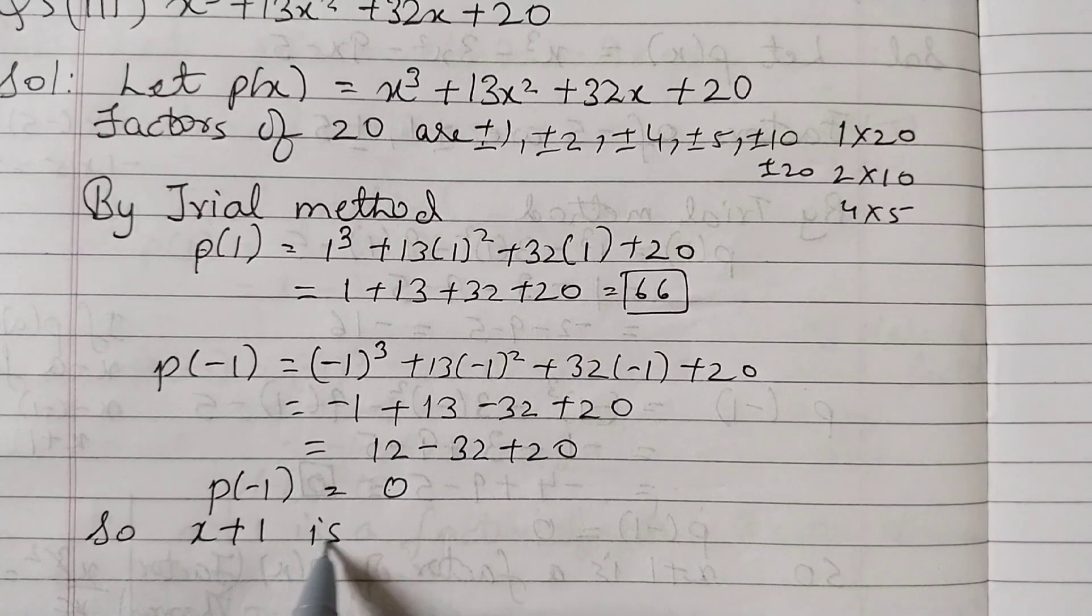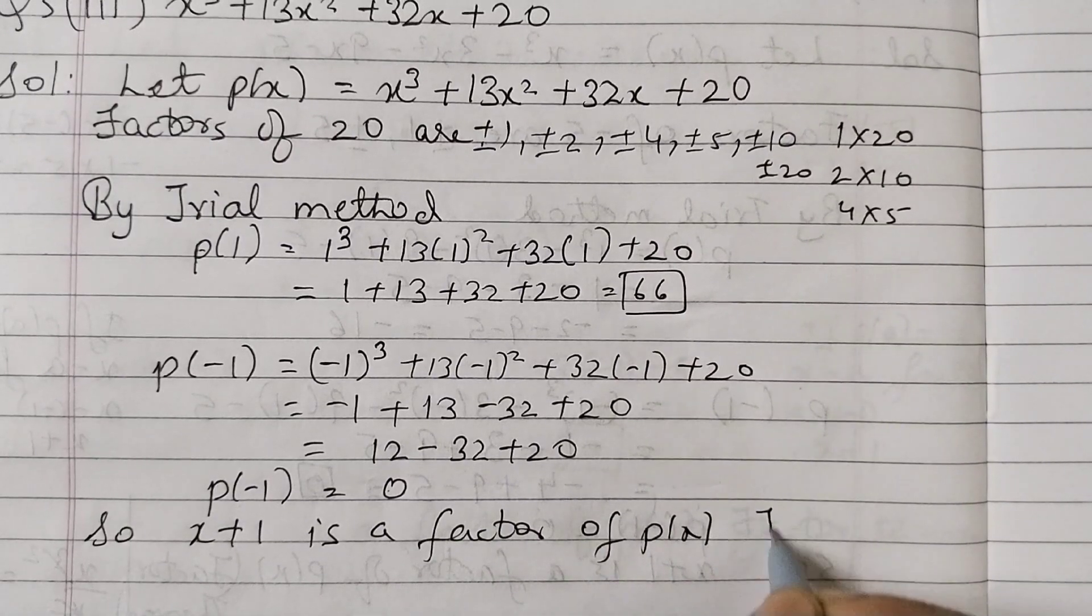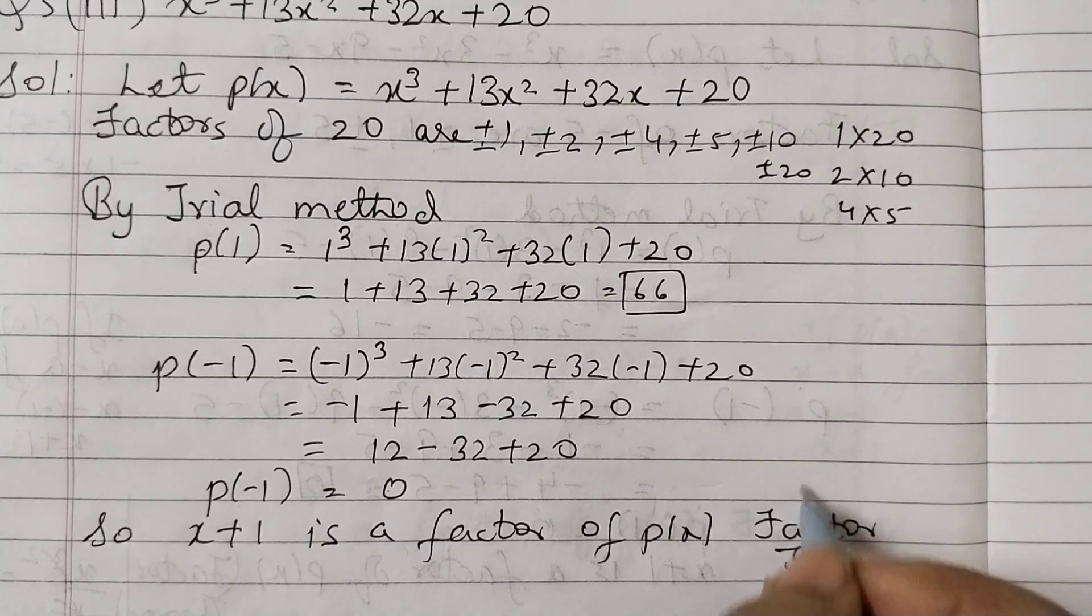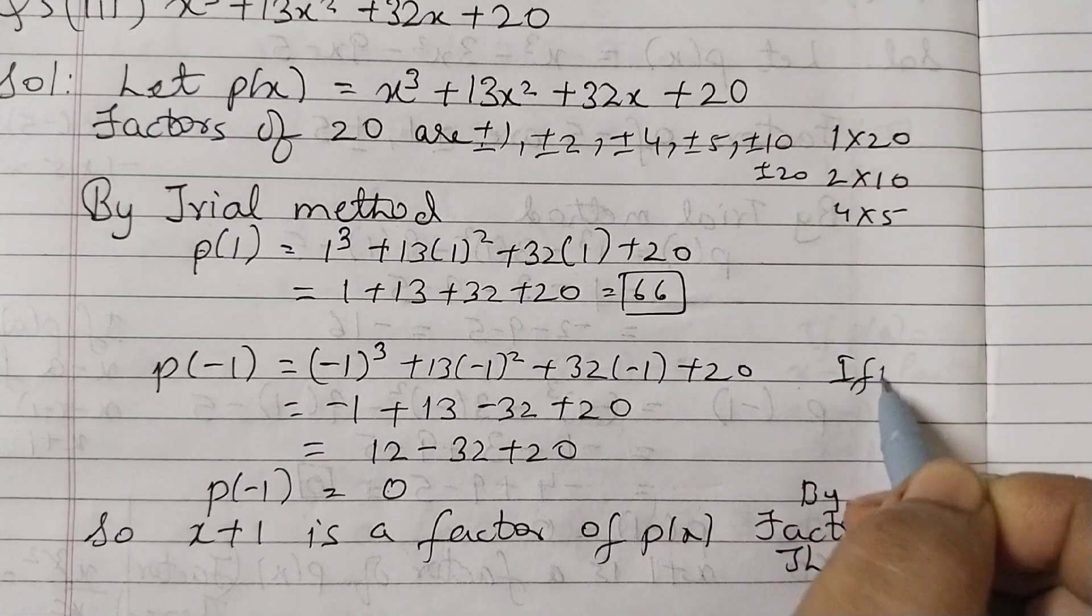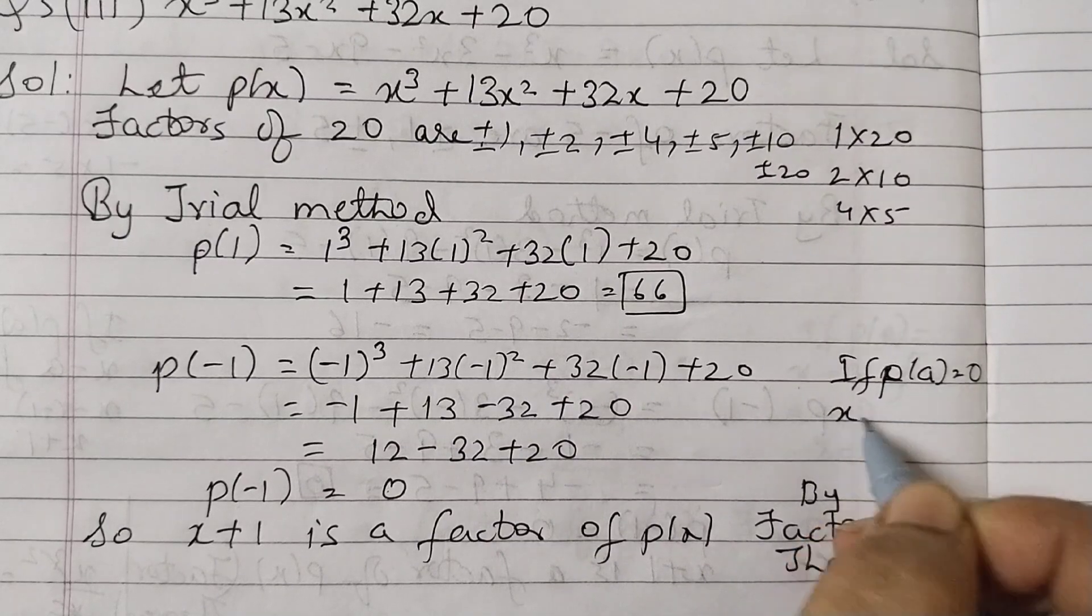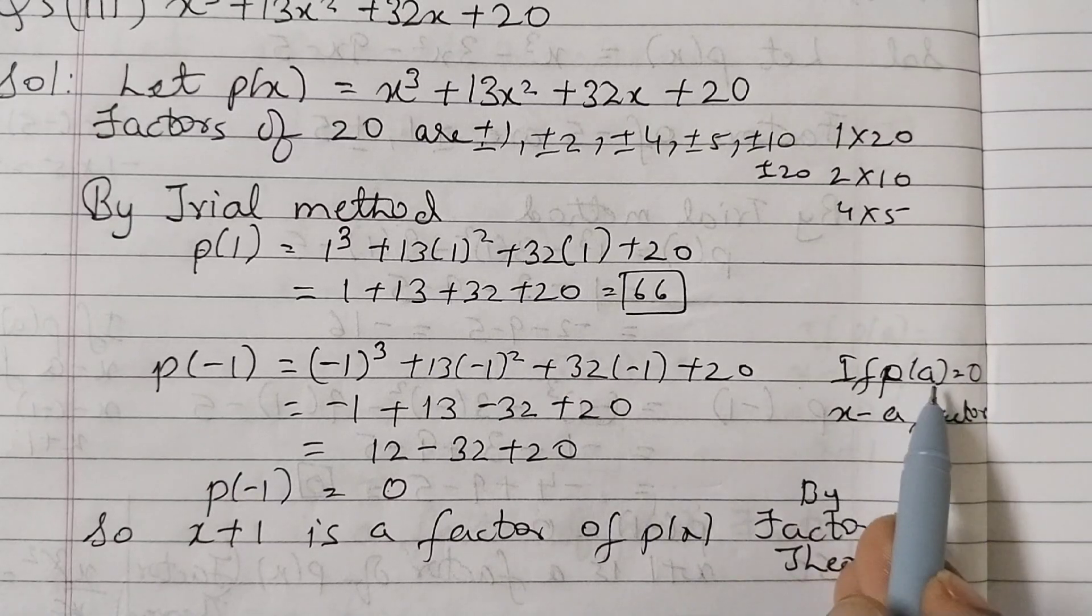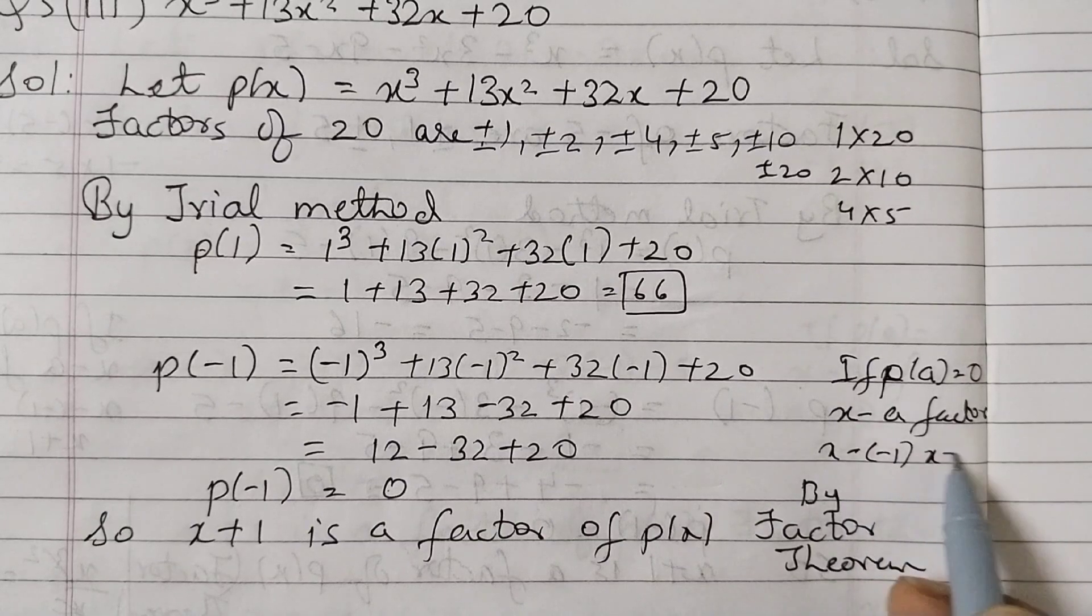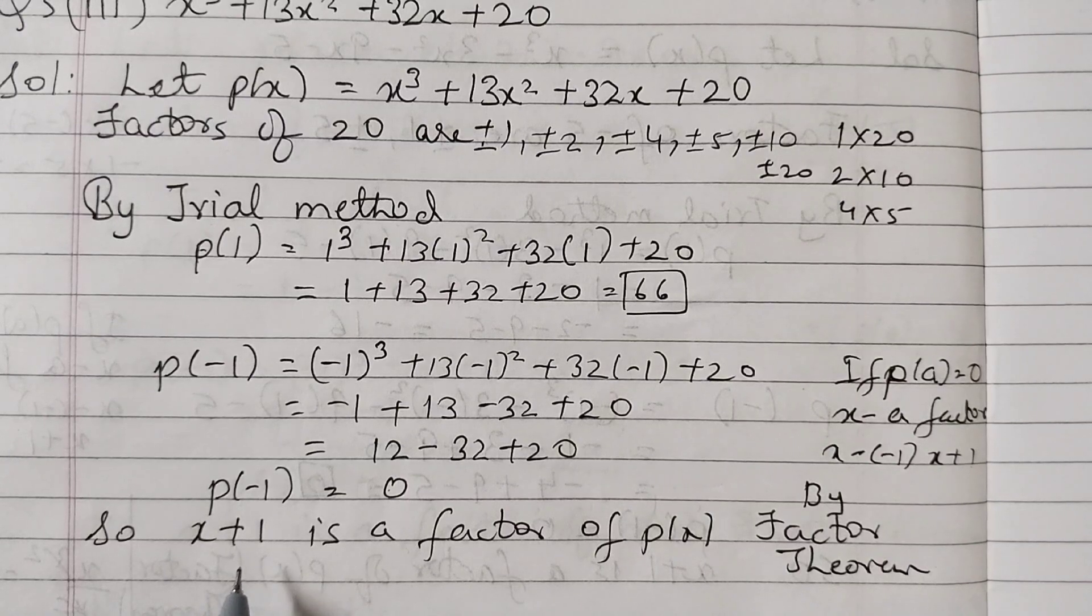And just write here factor theorem. This is by factor theorem. I have explained in the previous two problems that if p(a) = 0, then x - a is a factor of the given polynomial. Here a = -1, so x - (-1) = x + 1. That's how you got x + 1. So this is one of the factors of the given polynomial. The other factor we are going to find out by long division.